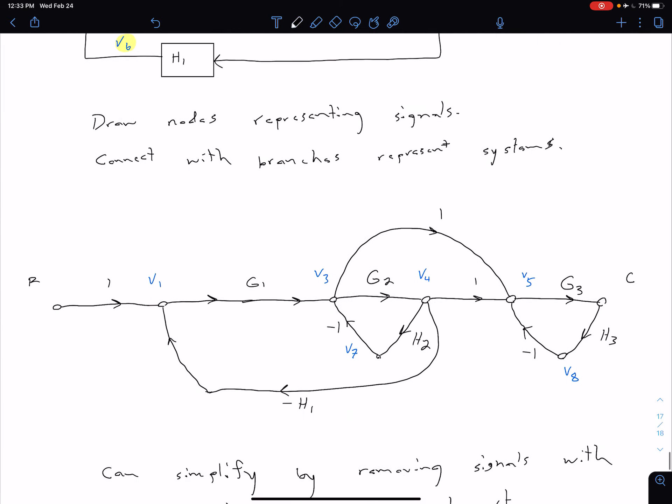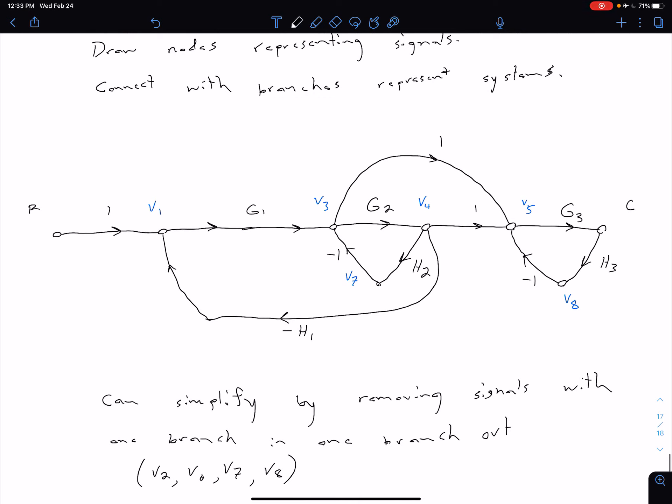Same thing with our V7. So we can come in here and we can get rid of our V7, the negative one is going to combine with our H2 to get negative H2.